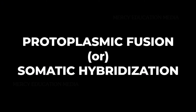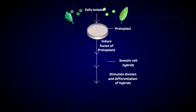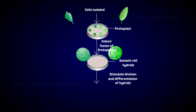A hybrid produced from fusion of protoplasts of two different species is called somatic hybridization. Naked protoplasts are obtained during dissolution of their cell walls by the macerating enzymes such as pectinase and cellulase.